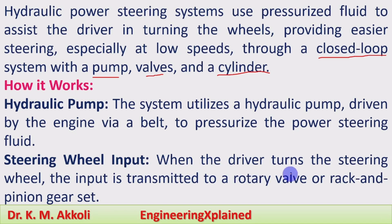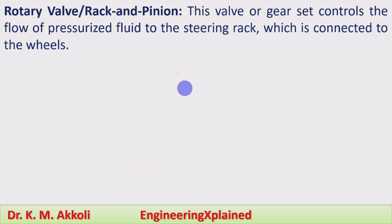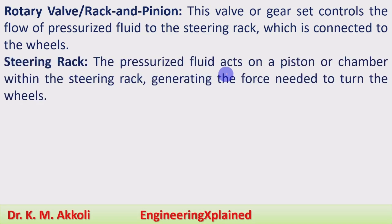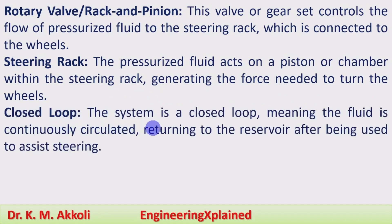When the driver turns the steering wheel, the input is transmitted to the rotary valve or rack and pinion gear set. This valve or gear set controls the flow of pressurized fluid to the steering rack, which is connected to the wheels. The pressurized fluid acts on a piston or chamber within the steering rack, generating the force needed to turn the wheels. The system is a closed loop, meaning fluid is continuously circulated and returned to the reservoir after assisting steering.